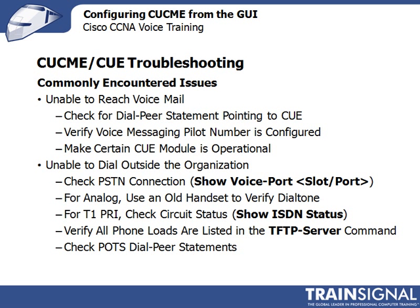Another common issue is the inability to reach voicemail. Make sure there's a dial peer statement pointing to the Cisco Unity Express module. For instance, if you're using extension 800, make sure that particular dial peer is pointing back at the IP address of the Cisco Unity Express module. Make sure it's a SIP connection. And make sure the module is operational — you can do show service module status to see whether it's operational. If it's shut down or there's an issue, that would obviously be the problem.